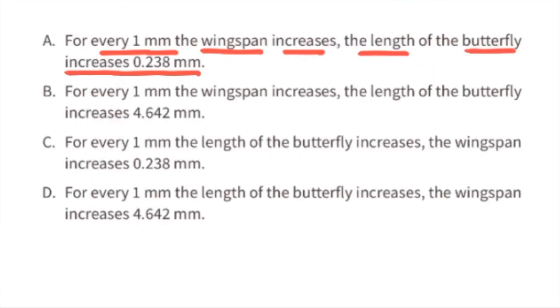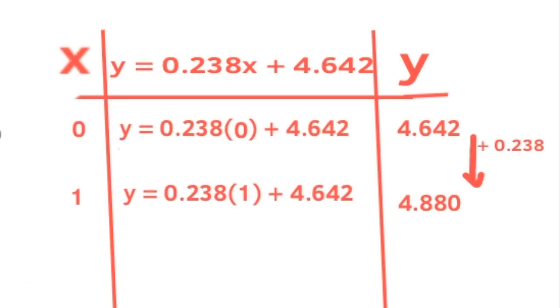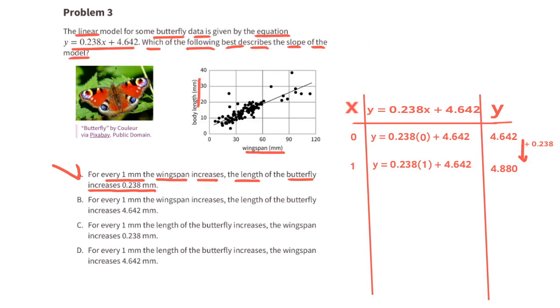Description A: for every one millimeter the wingspan increases, the length of the butterfly increases 0.238 millimeters. When the wingspan is zero, the length of the butterfly is 4.642 millimeters. But when the length of the wingspan increases one millimeter, the length of the butterfly becomes 4.880 millimeters, which is a difference of 0.238 millimeters. So description A describes the slope of the model perfectly.